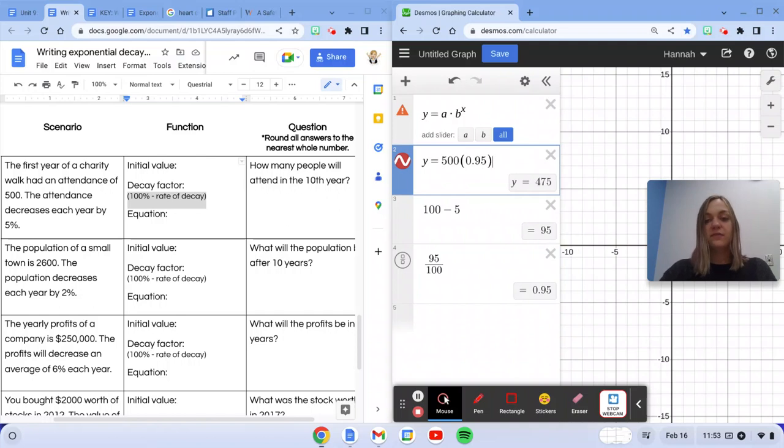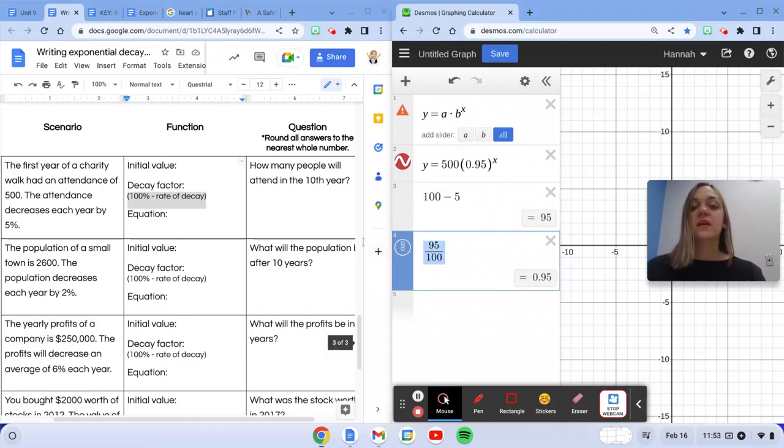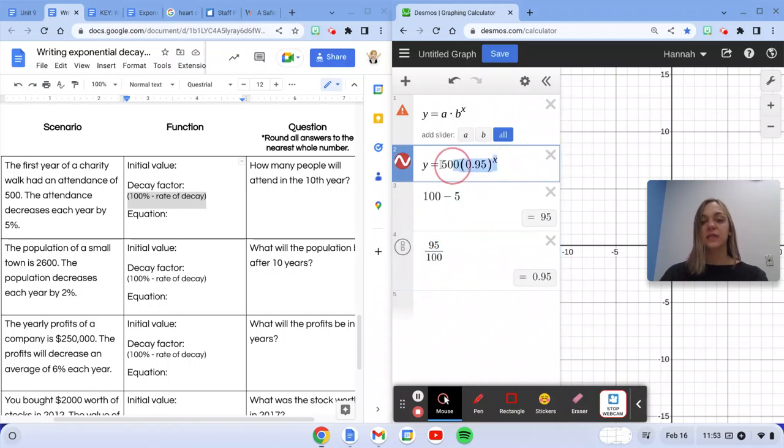And then my favorite variable to use is x. This is your equation. So to recap, we found the initial value. We found the decay factor by taking 100 percent and subtracting out the rate of decay. And then we converted that percent to a decimal to get it.